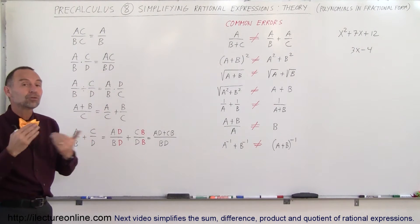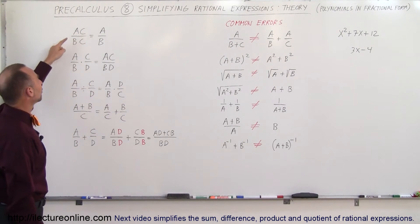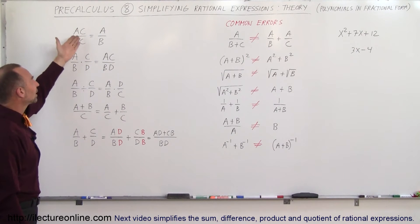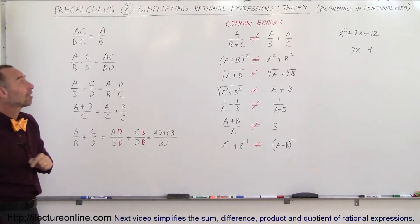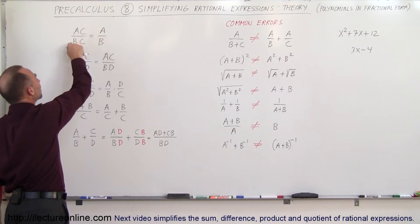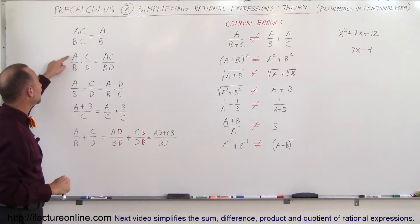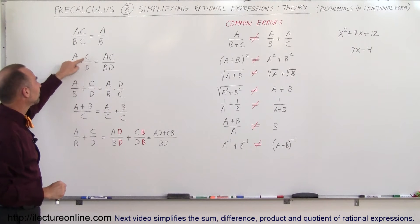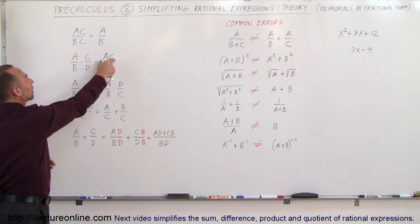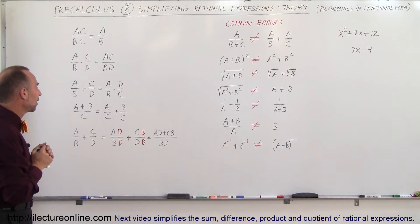When we have (a times c) divided by (b times c), they share a common factor so we can cancel it out. We can do this because both terms are multiplied. If it were a plus c over b plus c, we could not do that. Also, (a/b) times (c/d) is exactly the same as (a times c) divided by (b times d) — no difference whatsoever.